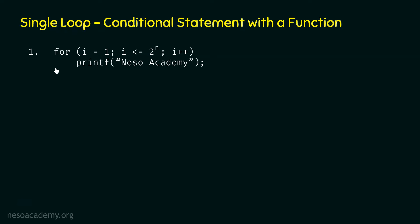To determine the time complexity of a loop, we need to find the frequency count of the innermost instruction of that loop. The innermost instruction of this for loop is printf Neso Academy. We need to determine how many times this instruction will execute. That number will tell us the time complexity of this loop. To do this, we need to analyze each iteration and observe different values of i to find the pattern.